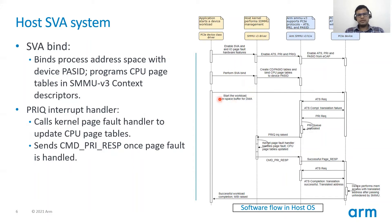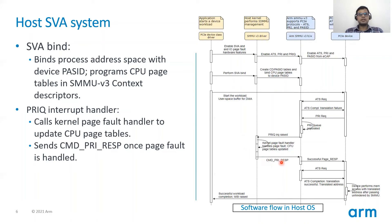Once the SVA bind happens, once the device starts a DMA workload, it will issue an ATS request. At first, the ATS will fail because of the absence of the user space pointer mapping. After that, the device can initiate a PRI request and as a result, the PRI queue of SMMU v3 will be populated and the corresponding interrupt is raised. As part of this interrupt handler, the kernel page fault handler is invoked. During this kernel page fault handling, the CPU page tables are updated with the right mapping and a response is sent back to the device, which is called a command PRI response. Once the device receives a successful page response, it can issue the ATS request once again and complete the DMA.